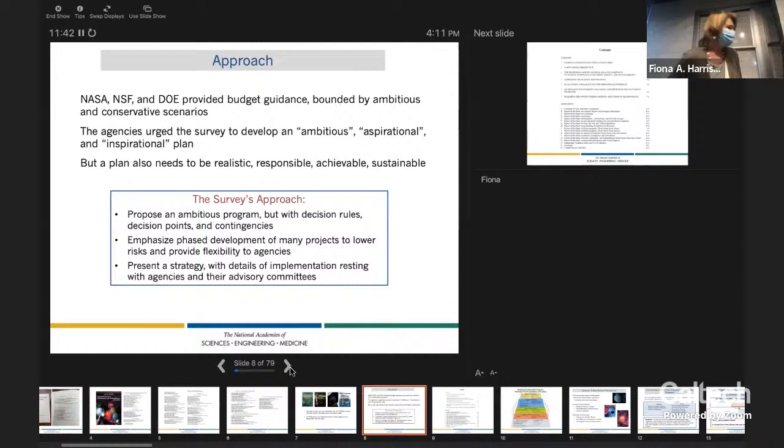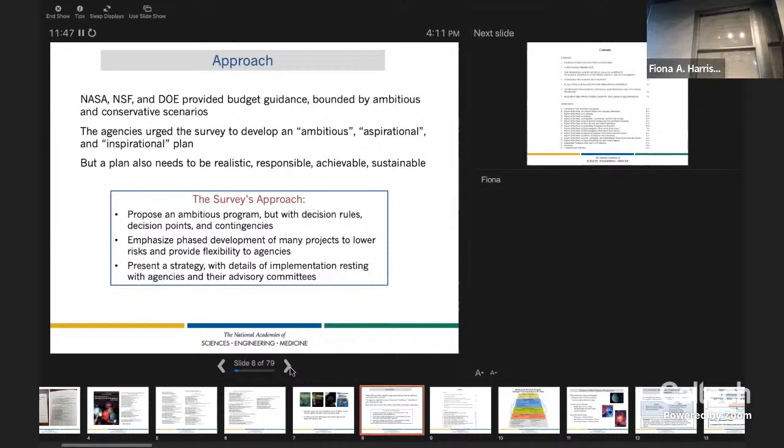So at the beginning of every survey, the agencies write a statement of task. And I was involved in NASA in 2010. And the message then was, we really don't want anything new, because we don't have any money. This time, actually, in contrast, both NSF and NASA said, we want an ambitious program. We want you to reach. We want something that motivates us to increase investment in this area of science. But they also gave us a budget profile. And they said, but don't spend more than this.